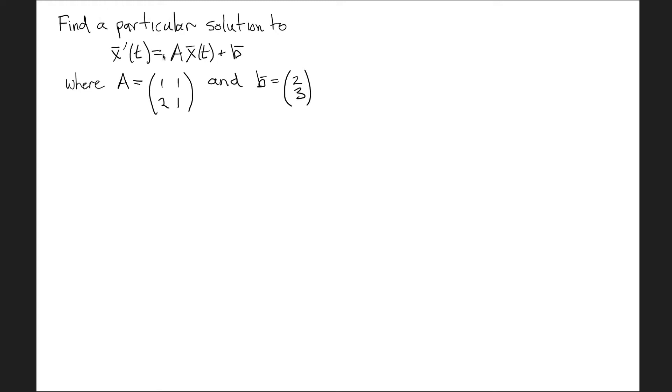So here's the statement of the problem: find a particular solution to x'(t) = Ax + B, where the matrix A in this example is (1,1; 2,1) and the vector B is (2,3).